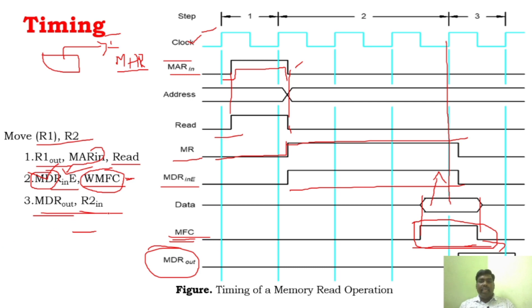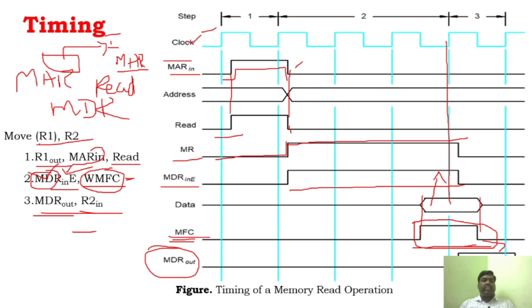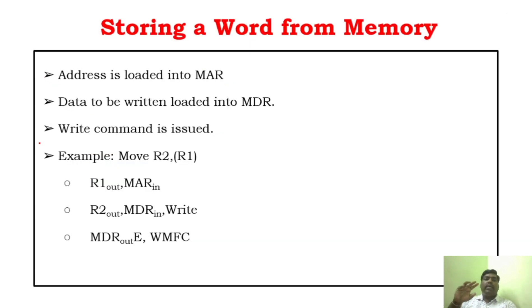So if you understand this timing diagram, you can write the sequence very clearly. All you have to understand is: first, it initializes the MAR. Whenever it has to fetch the data, it sends the address to the MAR and initiates the read cycle. At the end of the read cycle, the data is sent to the MDR. From MDR, it will send to the instruction register, and in our example it is a transfer of information - from MDR it is transferred to R2. This is fetching an instruction from the memory.